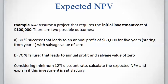Another example: assume an investment project that requires an initial investment cost of $100,000 and there are two possible outcomes. There is a 30% probability of success that leads to annual profit of $60,000 for five years with equal payments and zero salvage value, and a 70% probability of failure where we receive nothing — no annual profit and zero salvage. Let's calculate the expected NPV assuming a minimum discount rate of 12%.